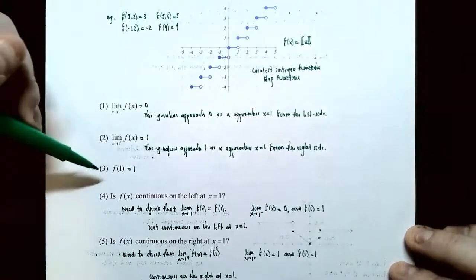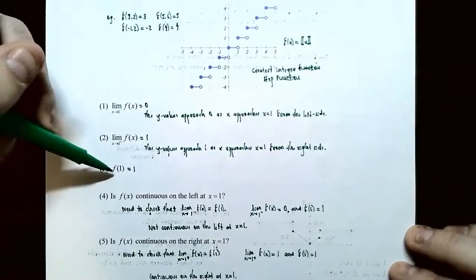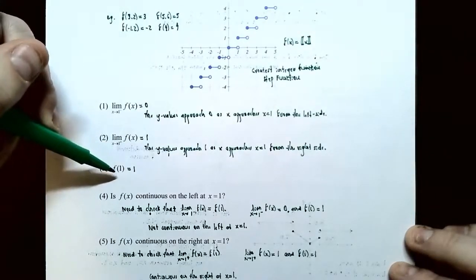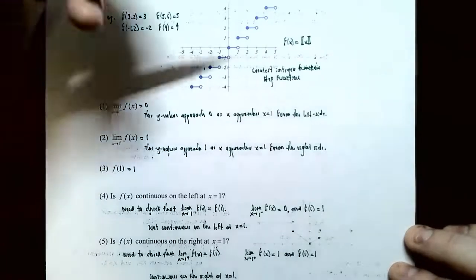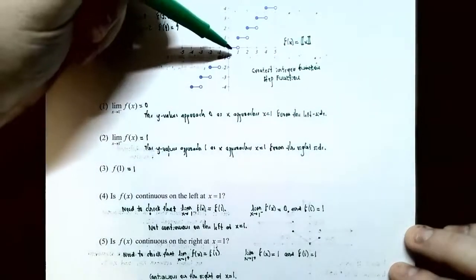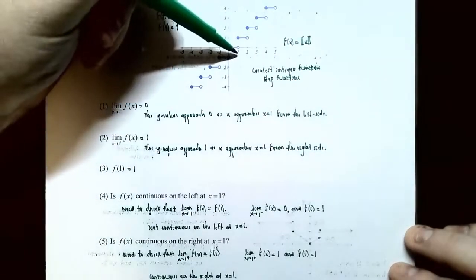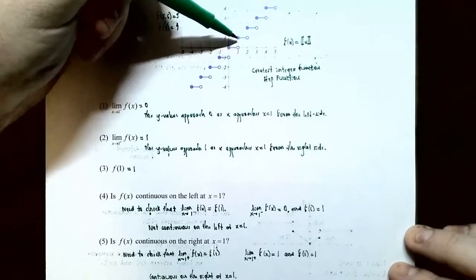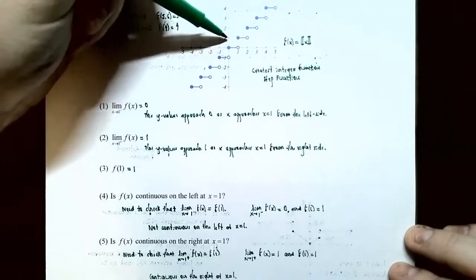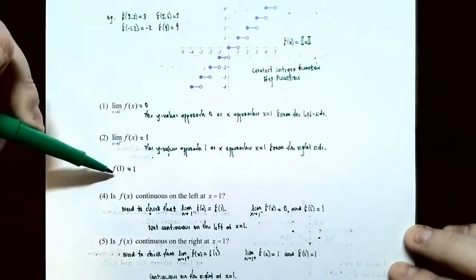Number 3: What is f(1)? At x equals 1, the point is filled in and the y value is at 1. So f(1) equals 1.